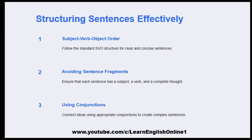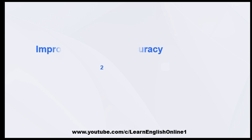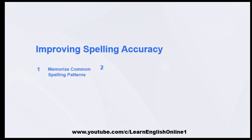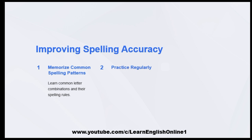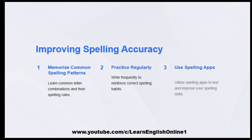Using conjunctions: connect ideas using appropriate conjunctions to create complex sentences. Improving spelling accuracy: memorize common spelling patterns and letter combinations. Practice regularly — write frequently to reinforce correct spelling habits. Use spelling apps to test and improve your spelling skills.